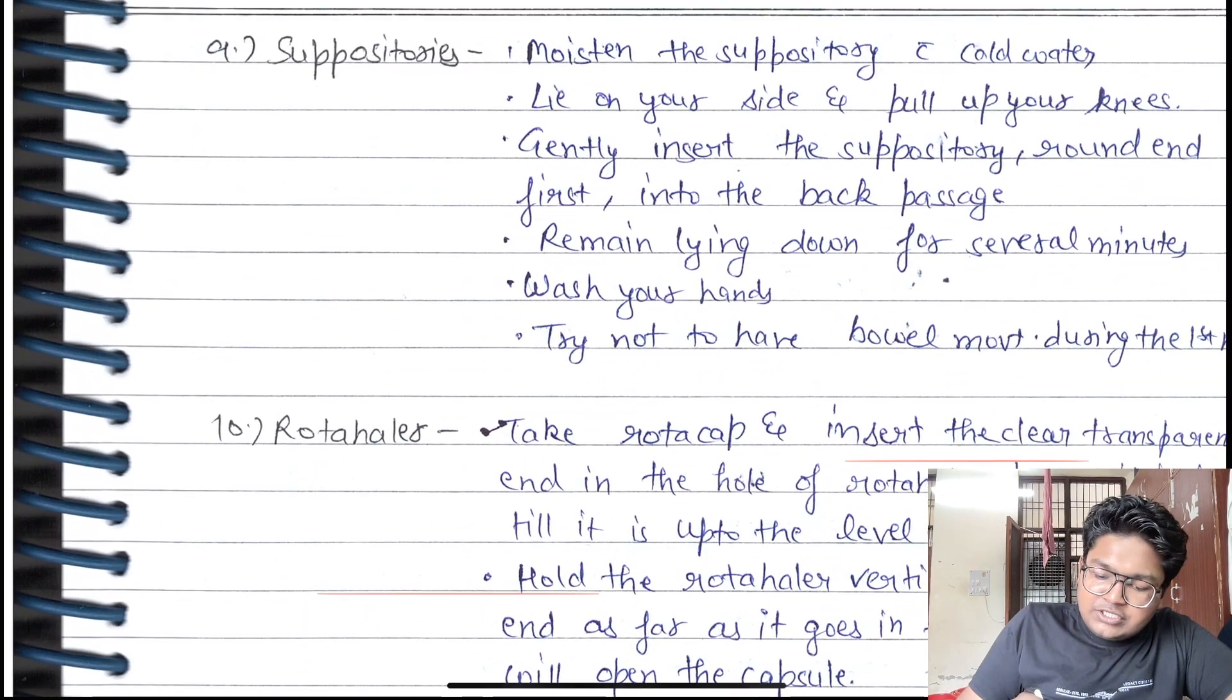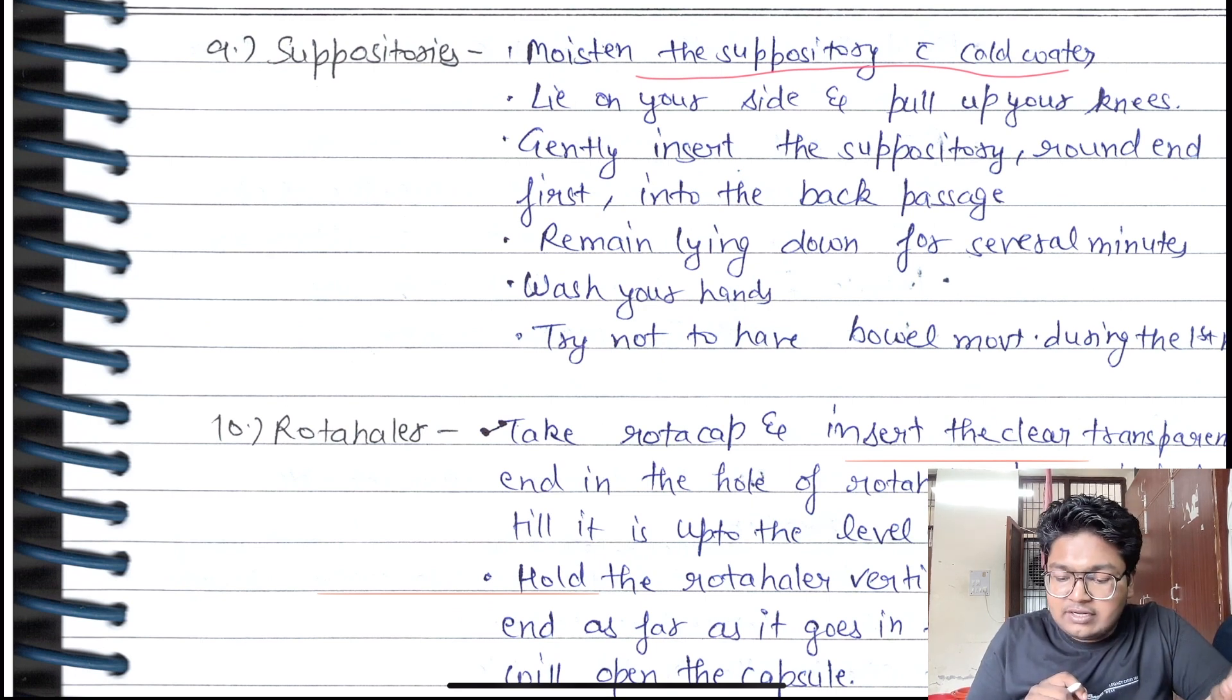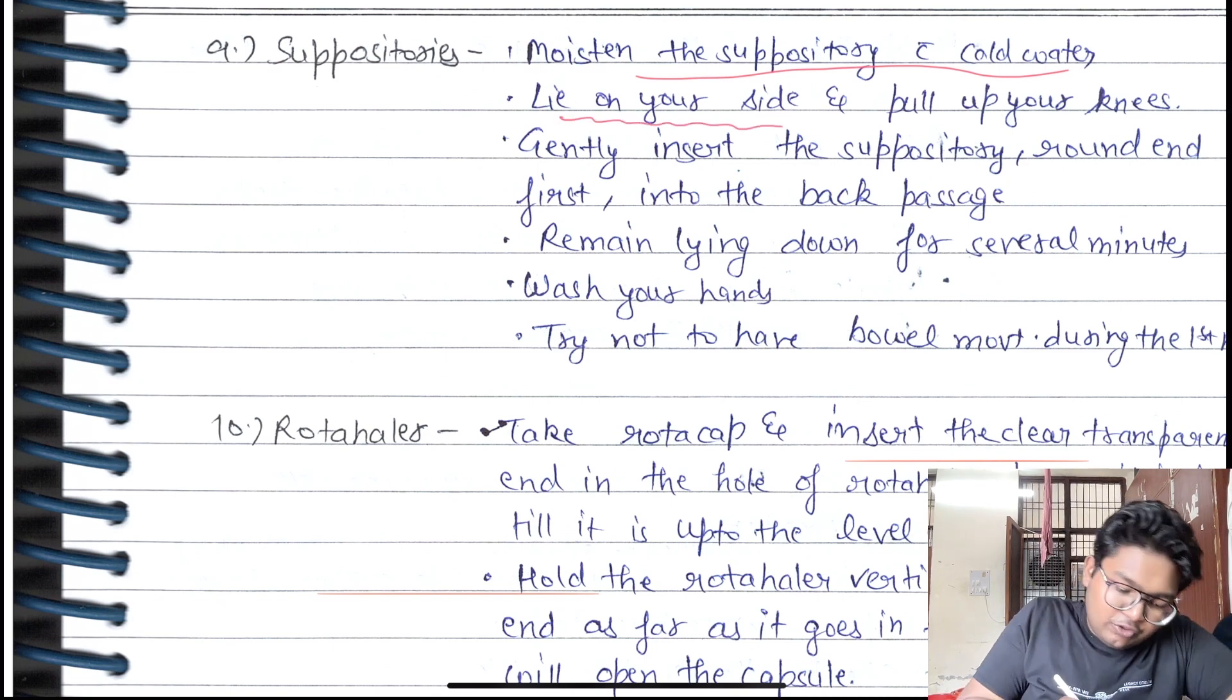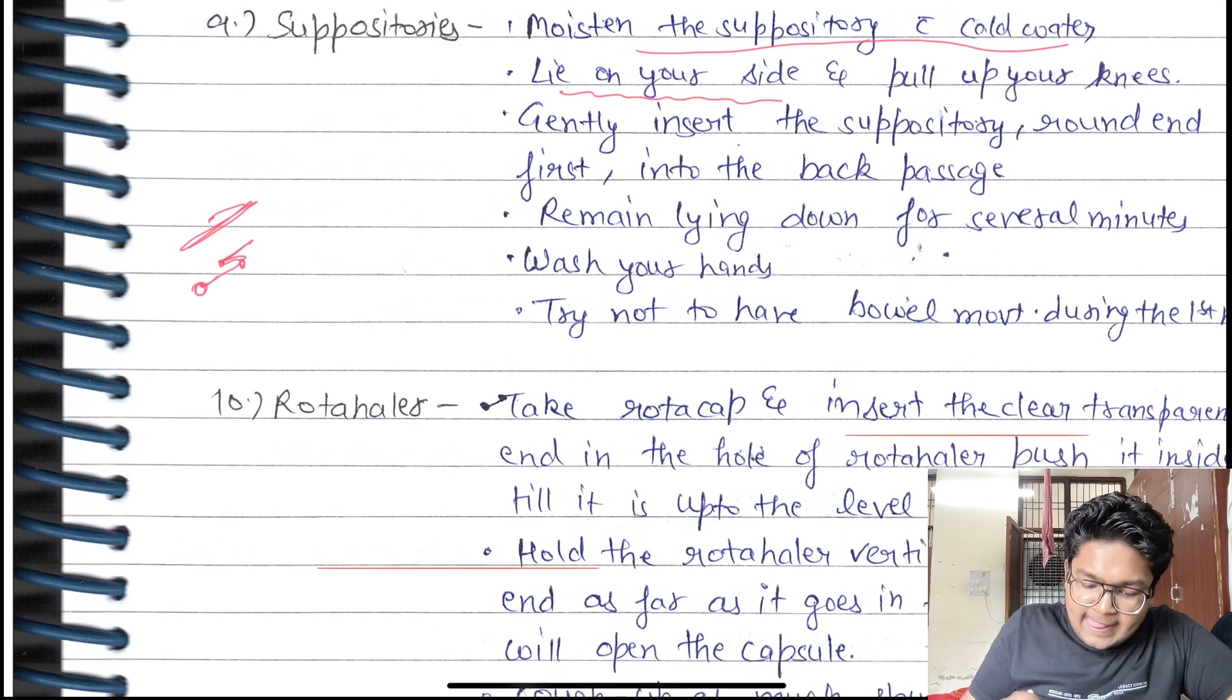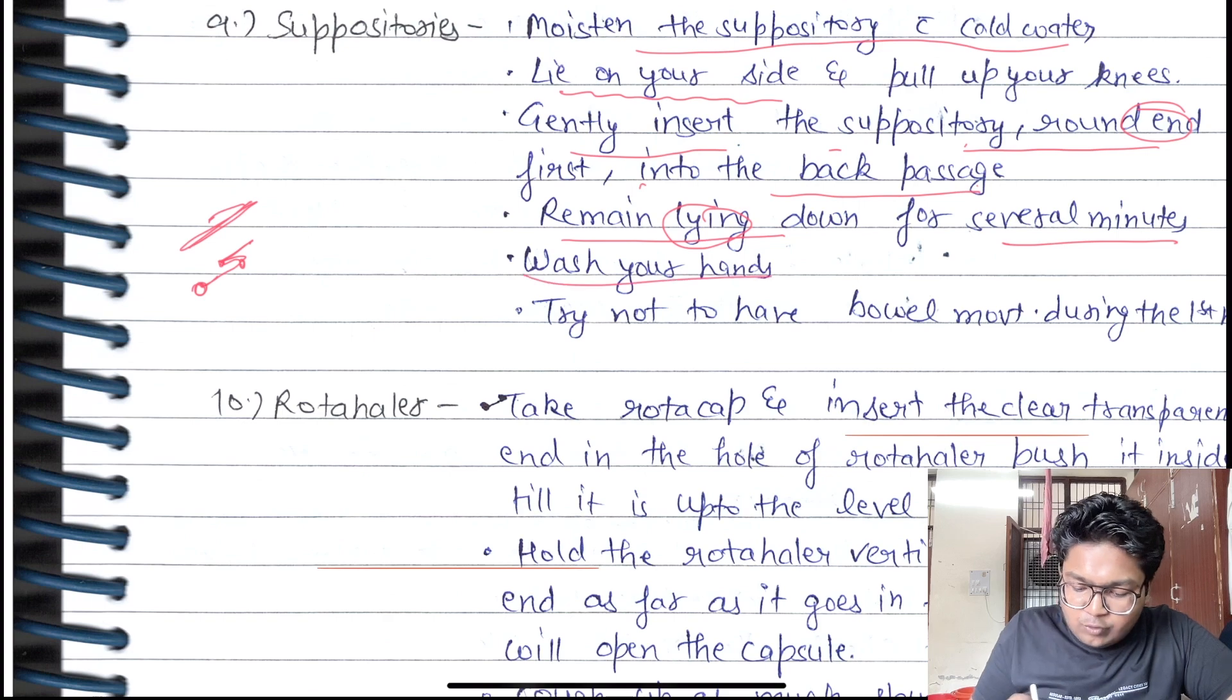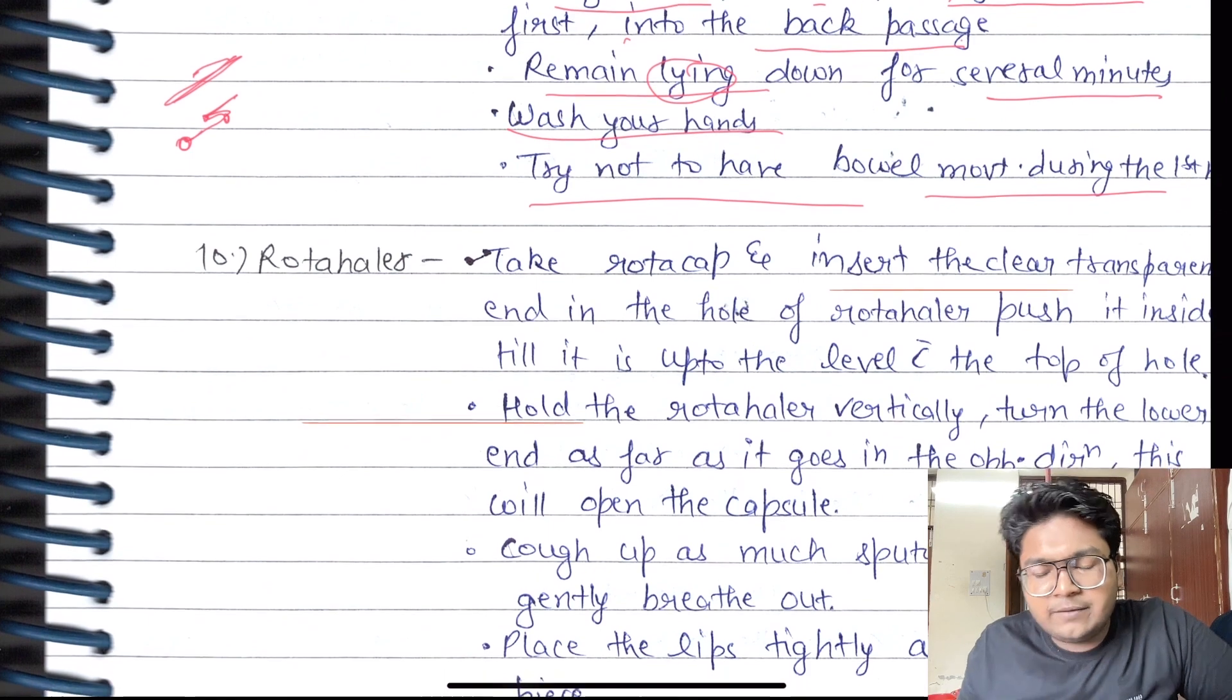Suppositories: moisten the suppository with cold water. Do not open and then put it in cold water because it will melt away. Lie on your side, pull up your knee. Gently insert the suppository round end first into the back passage. Remain lying down for several minutes. Wash your hands. Try not to have bowel movements for several hours or during the first hour only.